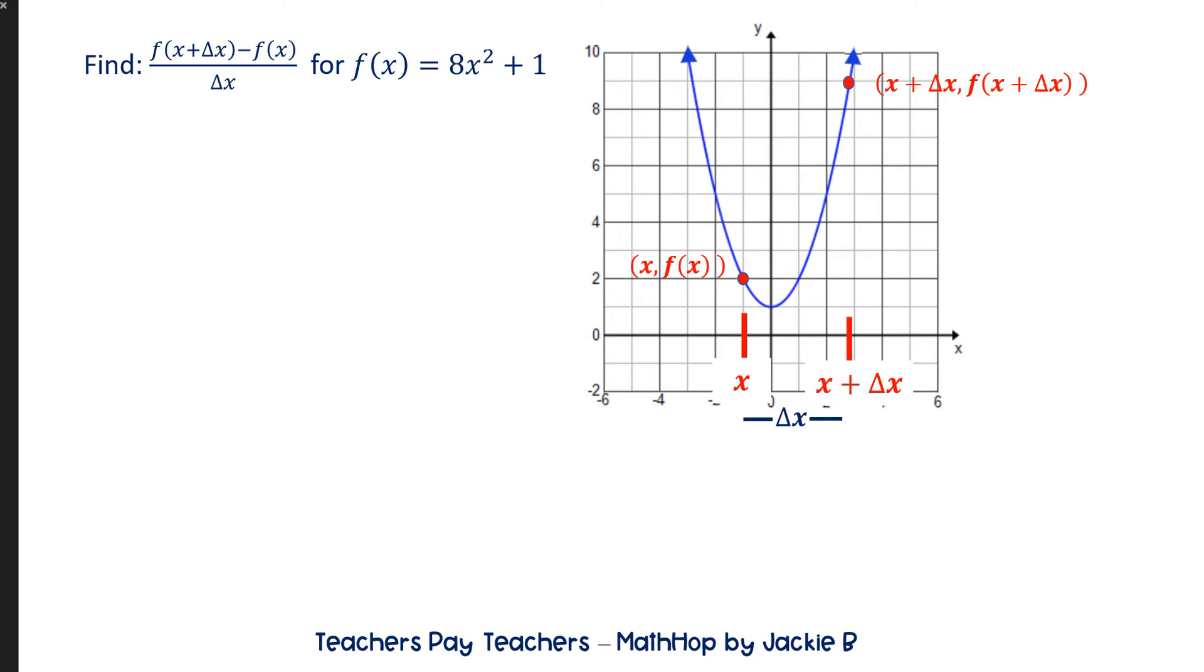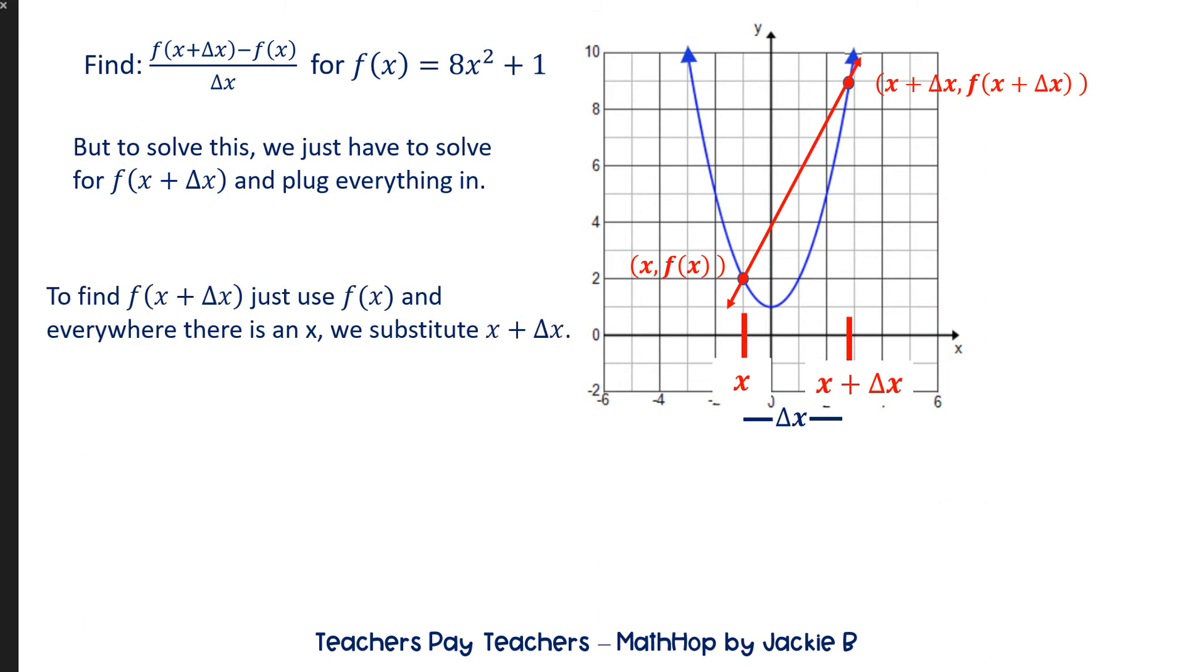But we don't need any of that right now. All we have to do for this is solve for f of x plus delta x. And you might be thinking, how are we going to do that? We're just going to do this like we would solve for f of 2. If you were solving for f of 2, you'd put a 2 in everywhere there was an x, and you would solve. Instead of 2, we're putting a weird expression in. So we're just going to put x plus delta x in everywhere we see an x in this function. So instead of 8x squared plus 1, it's going to be 8x plus delta x squared plus 1. So let's see what I mean.